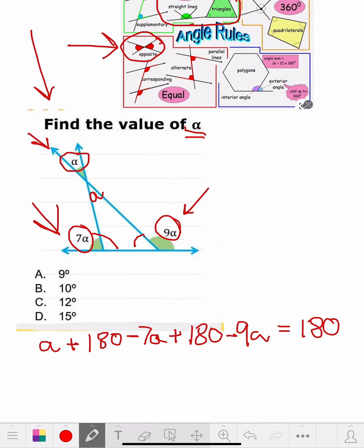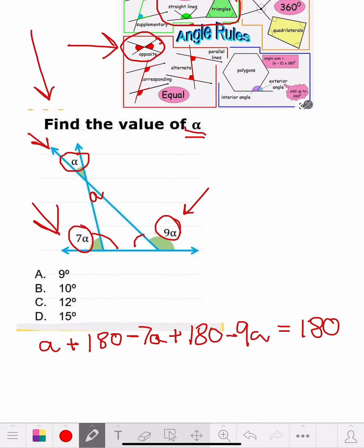So now, all we have to do now is combine like terms. So let's do it. We got a positive A, this is a positive one. And then we got a negative 7A. So that puts us to a negative 6A. Then we got a negative 9A. That puts us to a negative 15A.